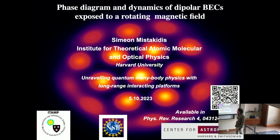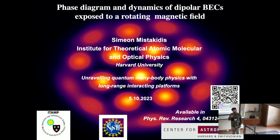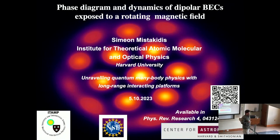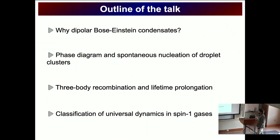Today I will talk about two separate stories. The first one will be about the phase diagram and the dynamics of dipolar Bose-Einstein condensates subjected to a fast rotating magnetic field. Then I will switch gears and discuss the classification of universal dynamics in spin-1 strongly interacting ferromagnetic condensates. Our work on dipolar gas is available in Physical Review Research, and let me also thank NSF for funding our research at ITAM.